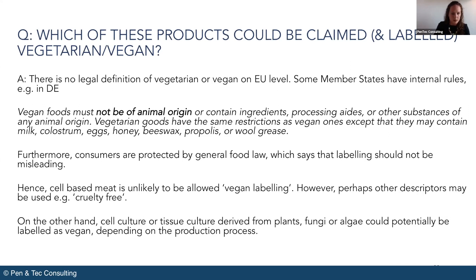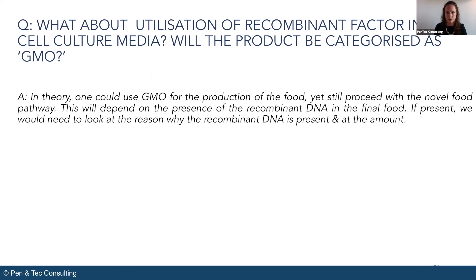The next question: what about utilization of recombinant factor in the cell culture media — will the product be categorized as GMO? So this depends. In theory, you could use a genetically modified organism in the production of a food and still fall within the scope of the novel food regulation. However, this would depend on the presence of the recombinant DNA in the final food. If not present, then the food would not be categorized as a GMO — it would be categorized as a novel food. But if present, we would need to look at the reason why the recombinant DNA is present and at the amount included in the final food.